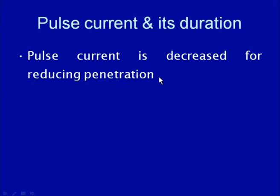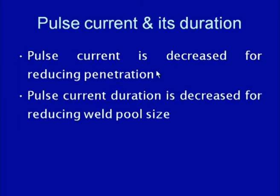If the purpose is to have lower penetration, the peak current value is decreased. The pulse current duration is decreased for reducing the weld pool size. There are two distinct aspects: the value of the pulse current (peak current) determines the penetration, and its value is decreased for reducing penetration. On the other hand, the pulse current duration is decreased for reducing the pool size, since a longer pulse duration generates more heat and increases weld pool size.